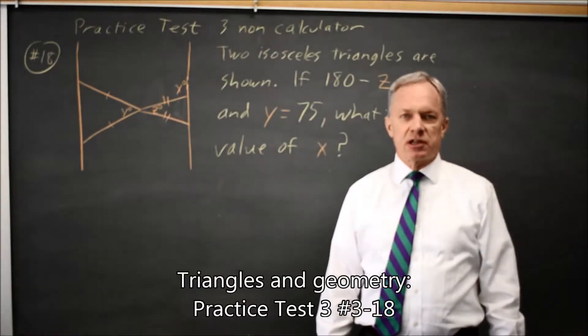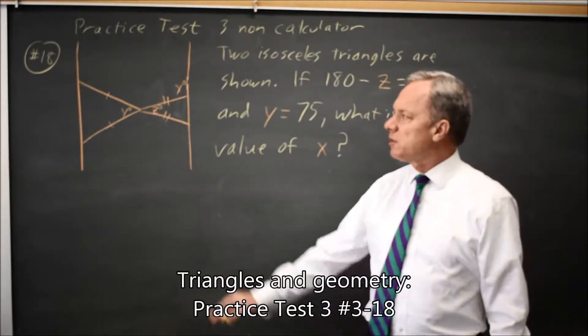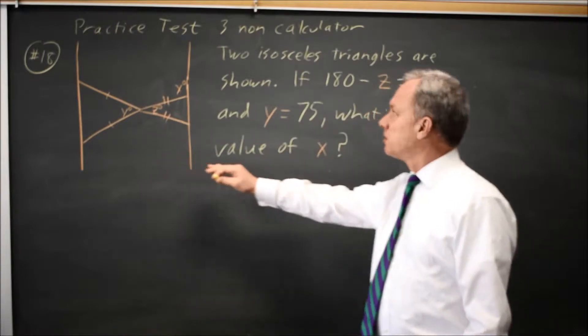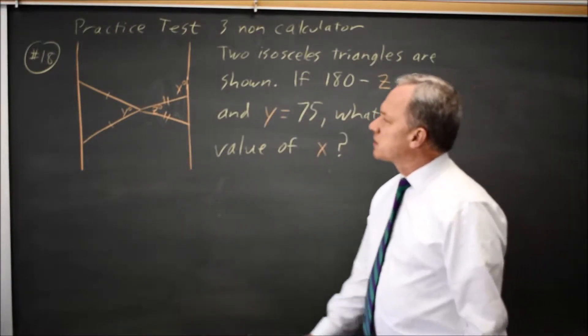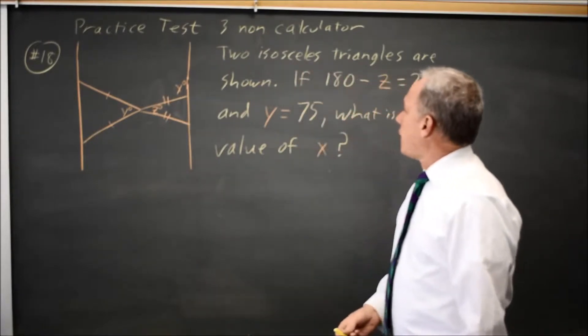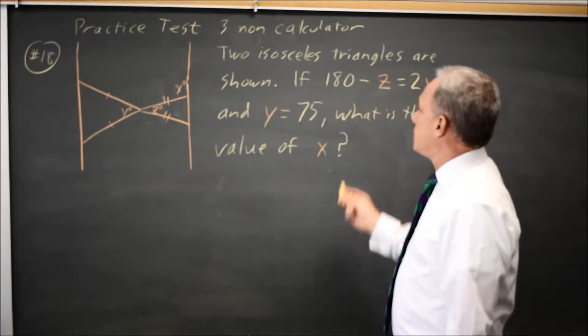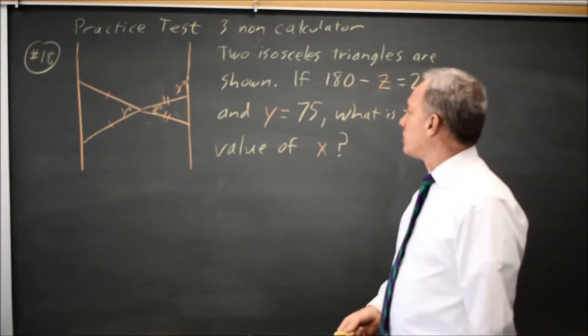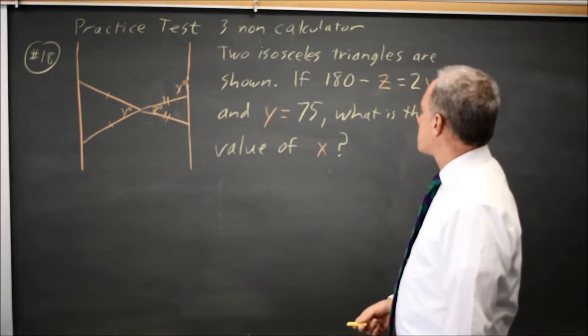This is SAT Test 3, non-calculator question number 18. College Board gives us a diagram of triangles and tells us that these two triangles are isosceles, as indicated, and gives us an equation relating z and y, and the value for y, and they ask for the value of x.